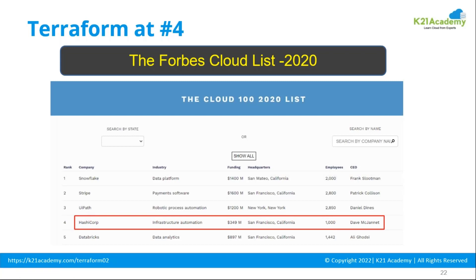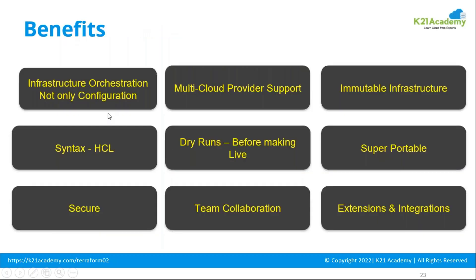Terraform is even a direct competitor for the first rank because of its many benefits. You can use it for multiple cloud service providers — it's portable, supports team collaboration, and is very secure. HashiCorp Vault is recommended for storing confidential information like secrets, tokens, and passwords. The syntax is very easy to learn, you can do a dry run before going live, it follows the DRY principle, and has many extensions and integrations — from Ansible to Kubernetes and everything in between.